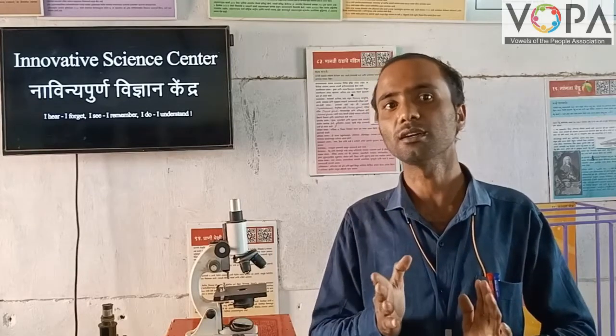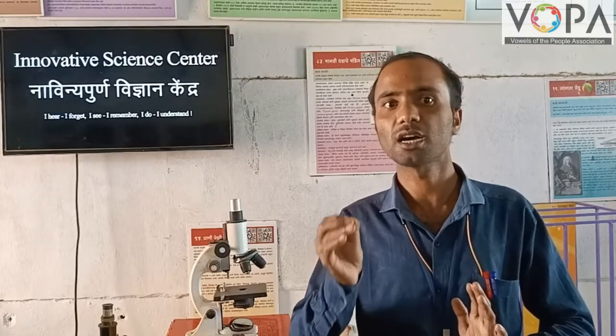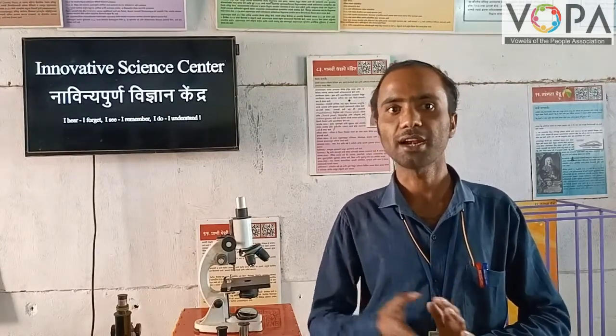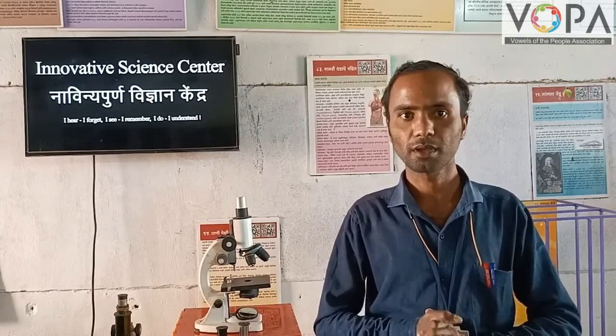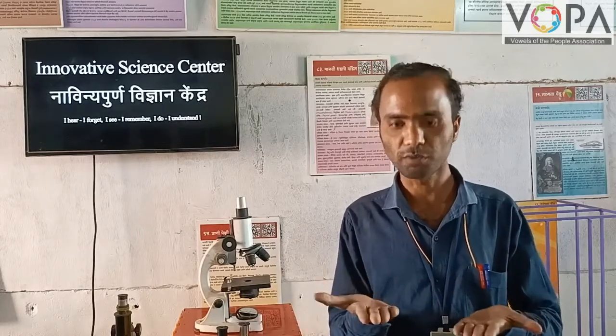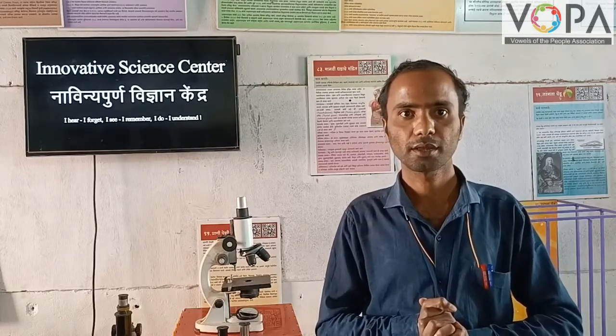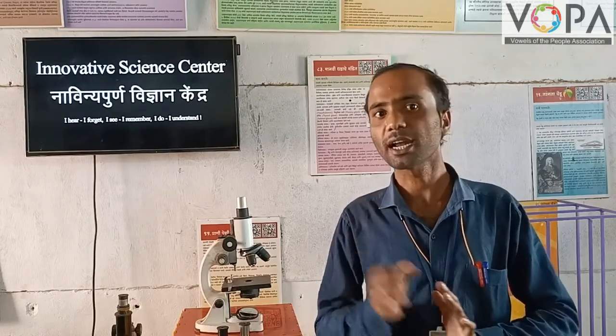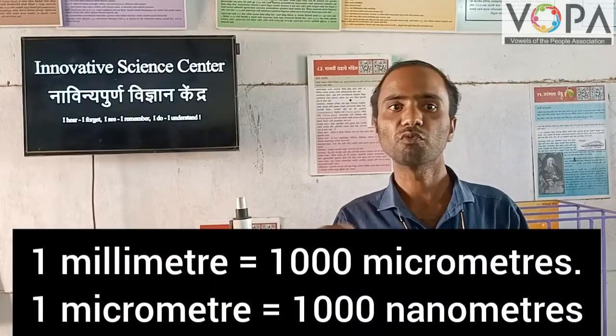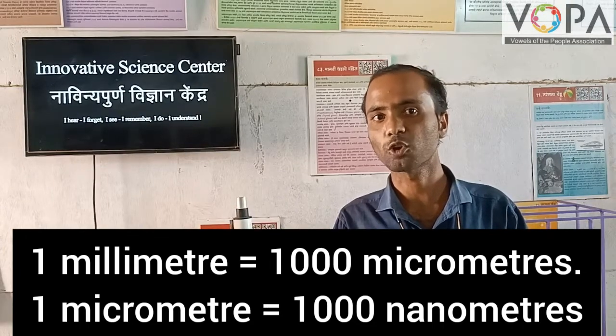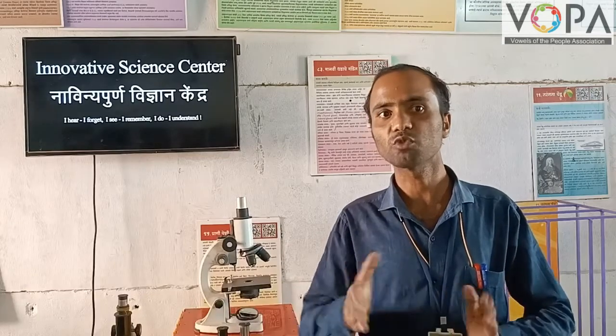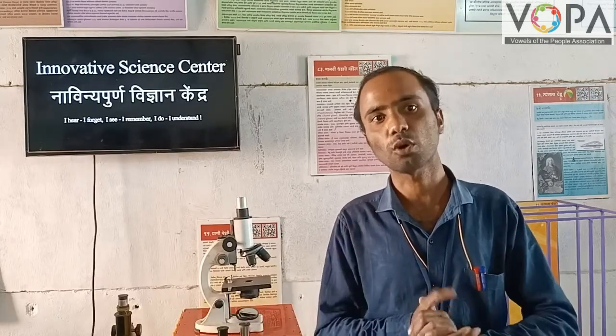In this video, we will learn about the observation and measurement of cells under the microscope. Microorganisms are very small — we can't see them with our naked eyes. We have to use a microscope or compound microscope to observe such microorganisms. Microorganisms are measured in micrometers and nanometers. One millimeter is equal to 1000 micrometers, and one micrometer or micron is equal to 1000 nanometers. These are the units we use to measure the shape or length of microorganisms.